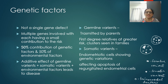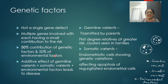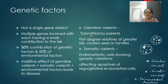The genetic component in pathogenesis: there is no single gene defect observed in endometriosis; multiple genes are involved, each having a very small contribution to risk. As a cumulative action of many genetic abnormalities the disease develops. There is usually a 50% contribution from genetic factors and 50% from environmental factors. There are additive effects of germline variants, somatic variants, and environmental factors. Germline variants are transmitted by parents.